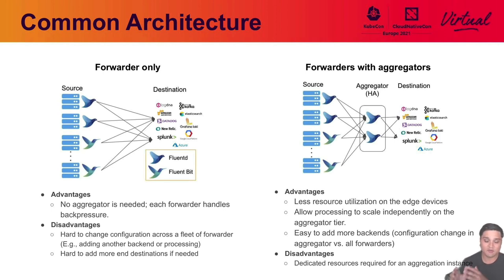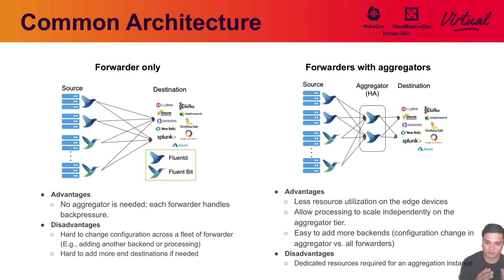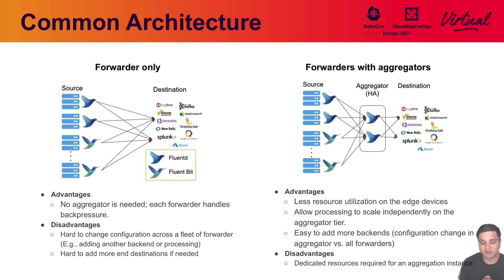A common architecture pattern we see with large scale is forwarders with aggregators. That means less resource utilization on the edge devices — all they're doing is collecting data and forwarding it to an aggregator. It allows you to process and scale the aggregator tier independently, and you can add more backends in a single tier. The disadvantage is you do have to dedicate some aggregator instances. That's the general overview of how Fluentd and Fluentbit are positioned within the Cloud Native Computing Foundation, and how they solve challenges at scale. I'm happy to pass it over to Hansel to talk about the use case specifics at Intuit and how petabyte scale can be achieved in reality.